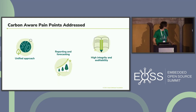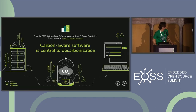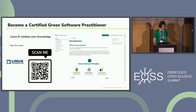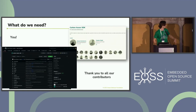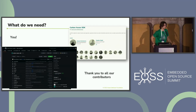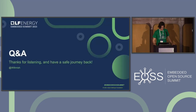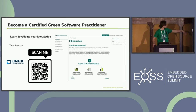Carbon aware software is central to decarbonization — one of the key points of decreasing emissions. The project has grown from 200 to 325 stars on GitHub and it would be great to have embedded engineers involved. There are also plenty of other projects in the Green Software Foundation where embedded expertise is very much welcome. Please check out the training at learn.greensoftware.foundation where you can learn more and even get an LF certification.